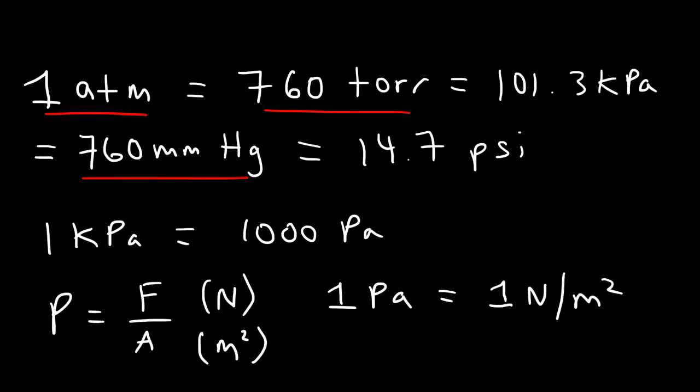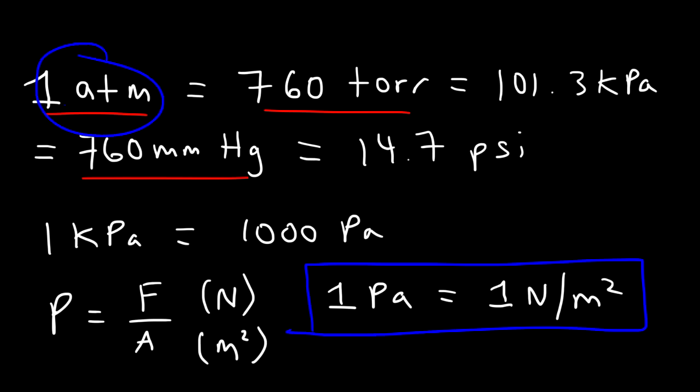In physics, the standard unit of pressure is pascals. In chemistry, the most common one you'll see is ATM, and then other common ones are torr and millimeters of mercury. Now let's go over some problems converting one unit into another. We're going to work on a few examples so you can master this topic, because you'll need it when solving gas law problems.